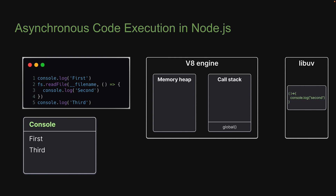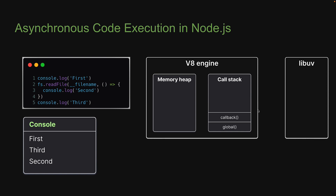At about four milliseconds, let's say that the file read task is completed in the thread pool. The associated callback function is now pushed onto the call stack. Within the callback function, we have the log statement — that is pushed onto the call stack. 'Second' is logged to the console and the function is popped off. As there are no more statements in the callback function, that is popped off as well. No more code to run, so the global function is also popped off the stack. The console output is going to read: first, third, and then second. This is how the Node runtime executes an asynchronous code snippet that uses fs.readFile.